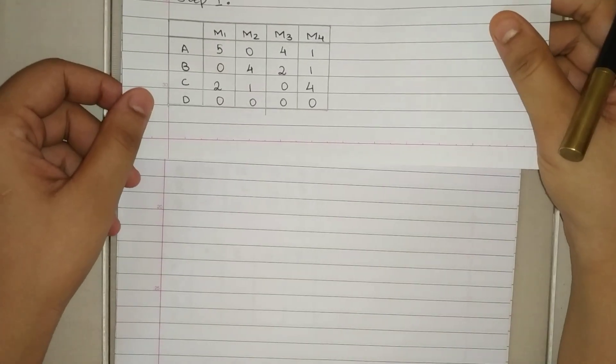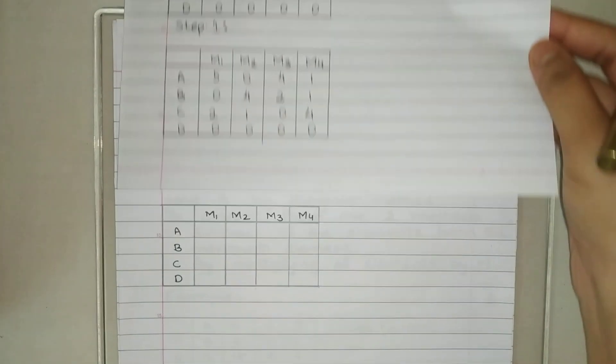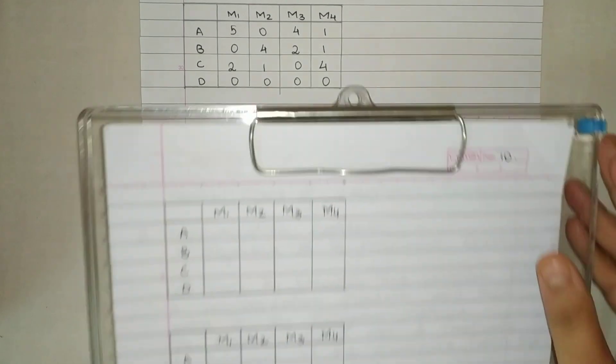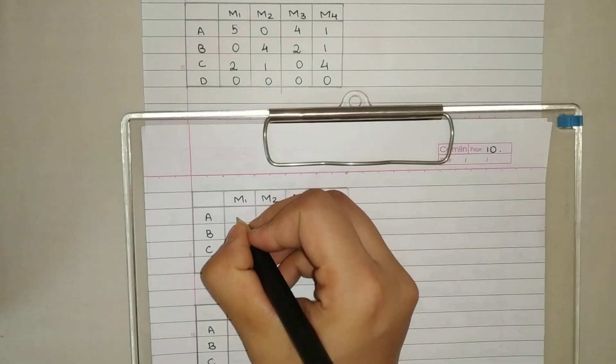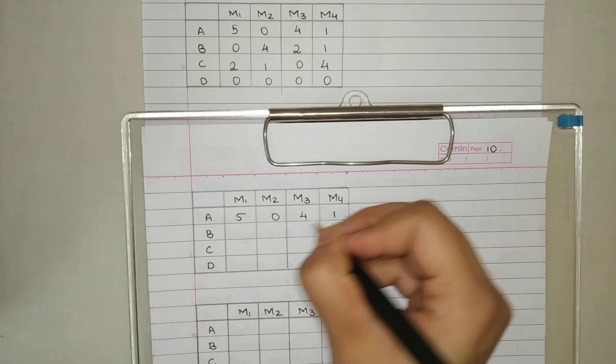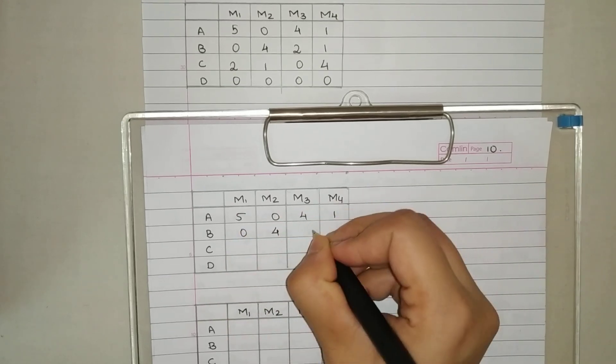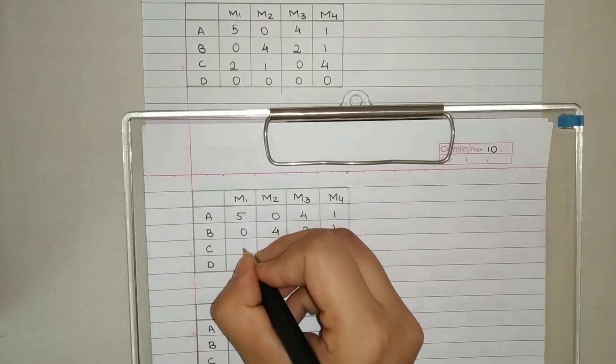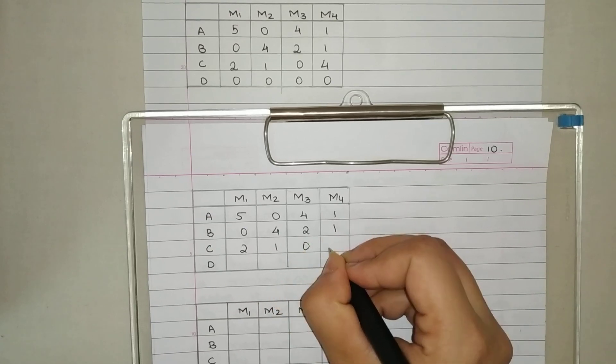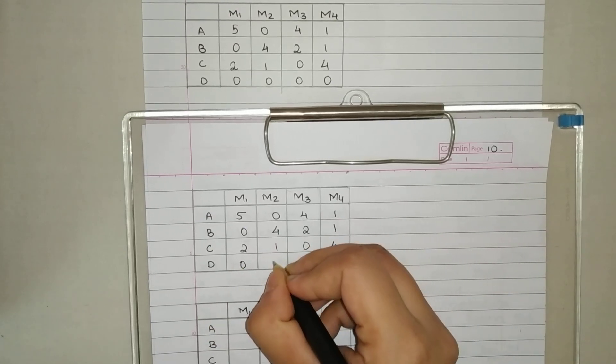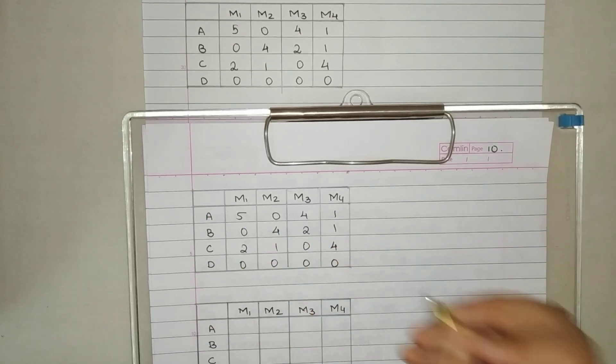Now in step two, we have to subtract the minimum from each column. But actually, in this everything in the last column is already zero, so it will remain the same. I'll just copy it. Five, zero, four, one. Zero, four, two, one. Zero, zero, one, four. Zero, zero, zero, zero.